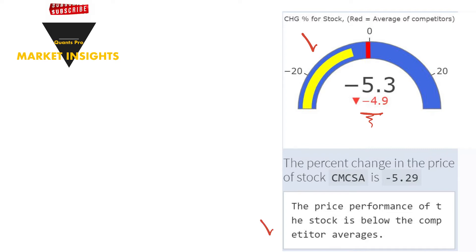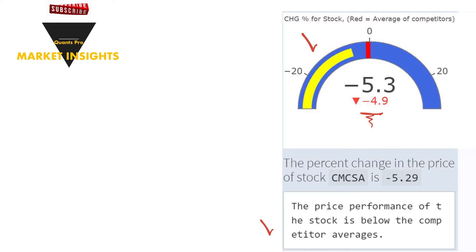If the yellow color exceeds the red, the price of the stock outperformed the average of its competitors. It can be said that the company, which is exposed to market conditions including its competitors, differentiates relatively positively in this respect. If red exceeds yellow, the firm's performance is below competitor averages — a situation that involves risks about the future of the stock.